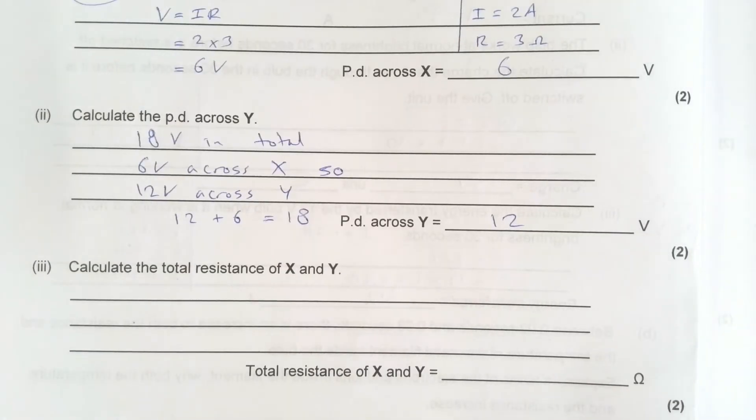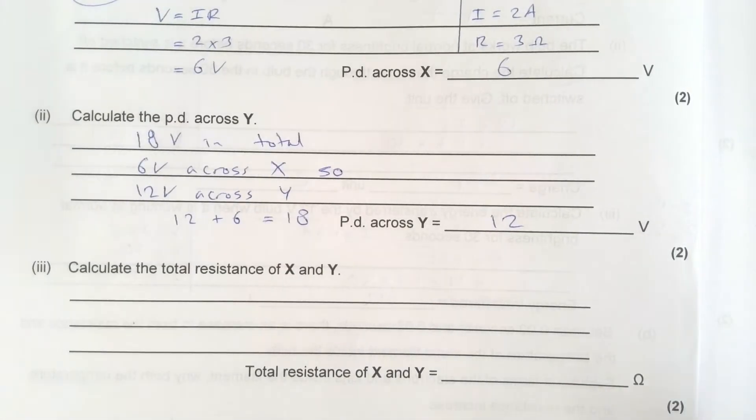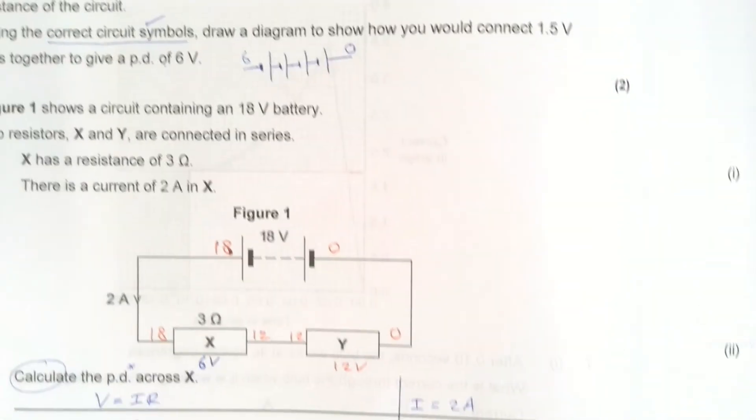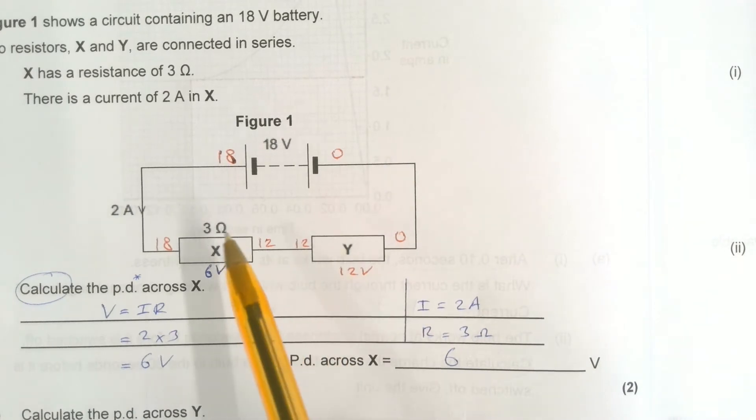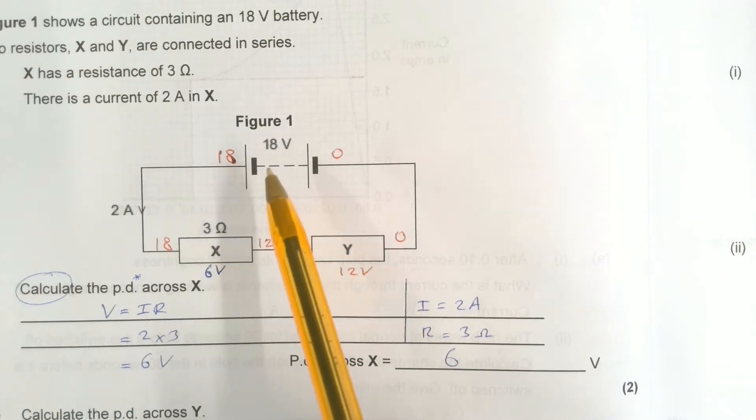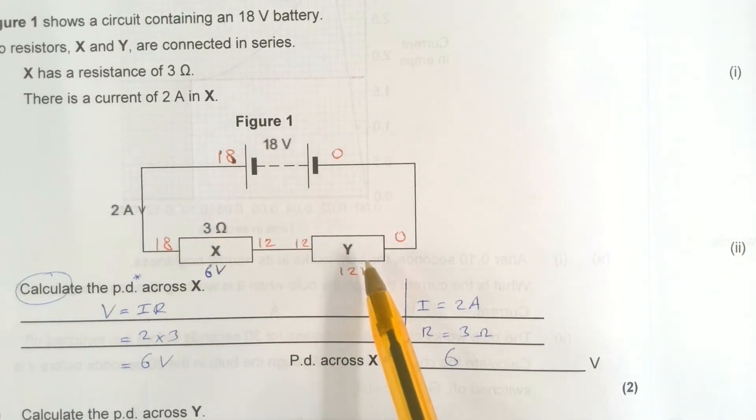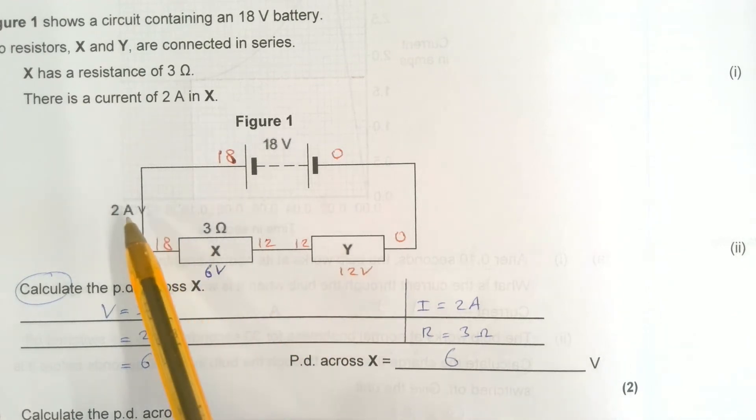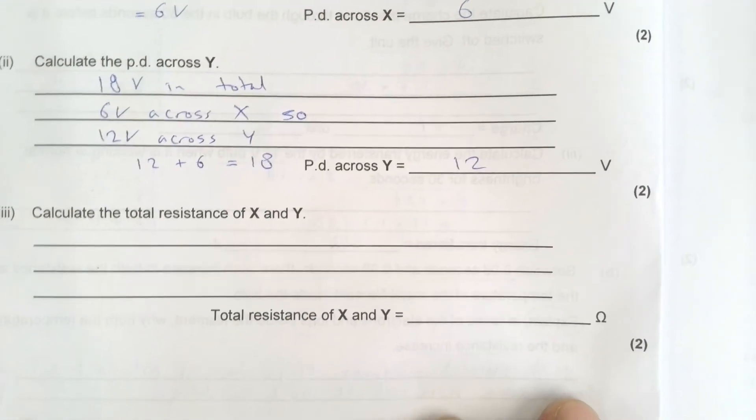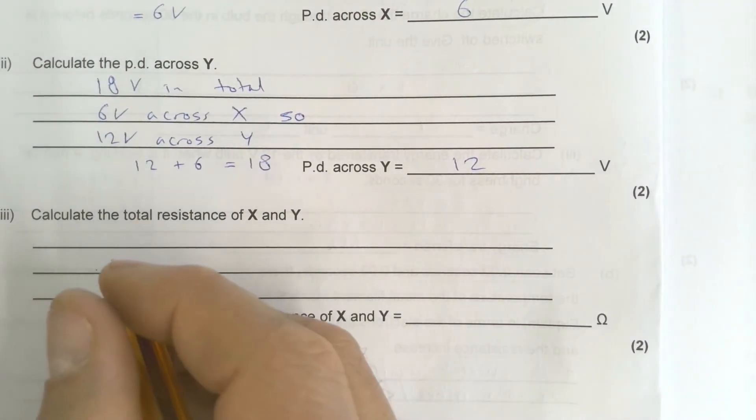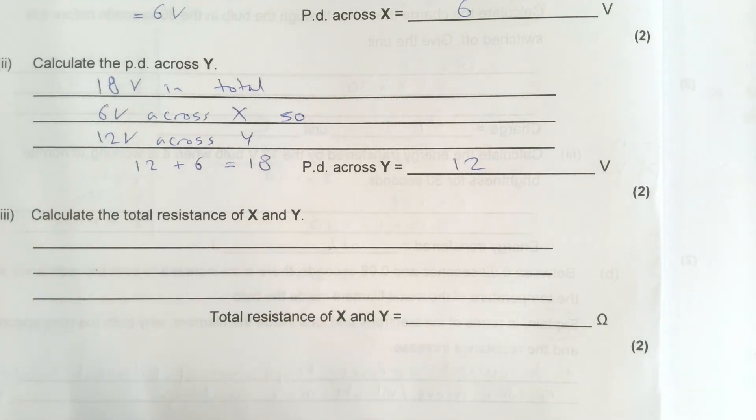Calculate the total resistance of X and Y combined. So let's see. What do we know about this? We know that there is a total, across both of them, of 18 volts. And we know that there is a total current of 2 amps, 2 amps, 2 amps through these. So what we don't know is we don't know the total resistance.